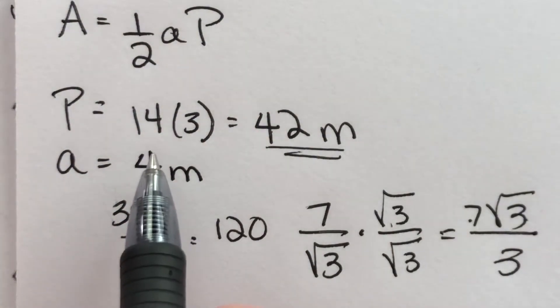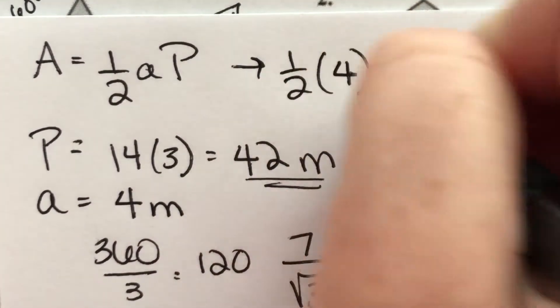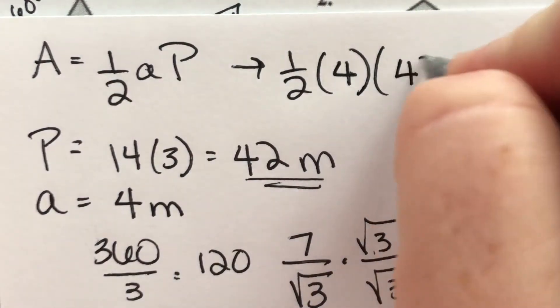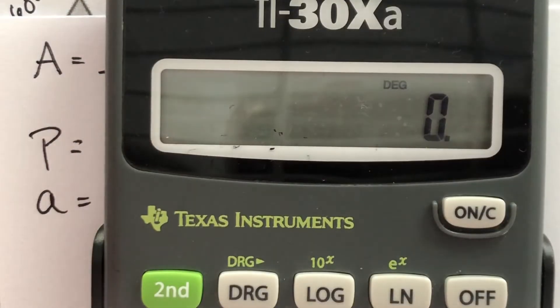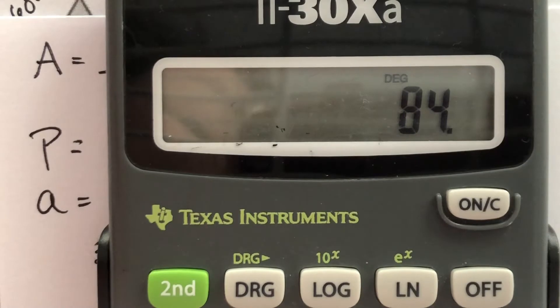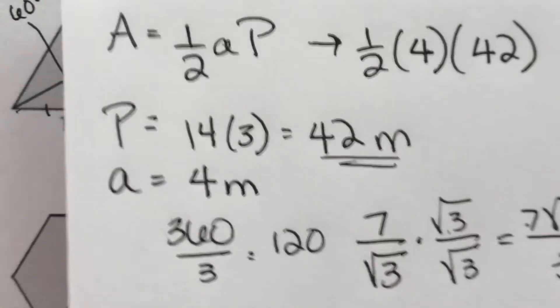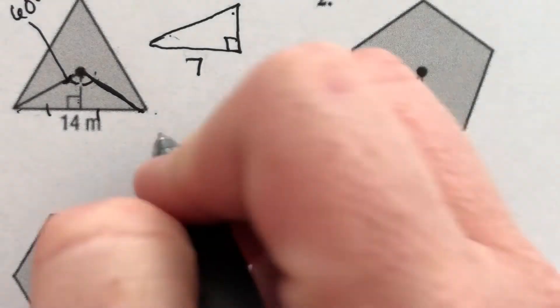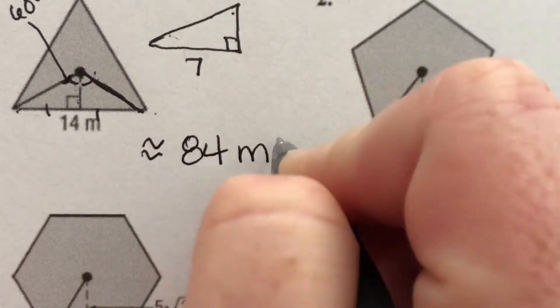Once I have the apothem, I plug it into the equation: one-half times 4 times the perimeter of 42. So I multiply 4 times 42 and divide by 2, and I get about 84. That's the area — about 84 square meters.